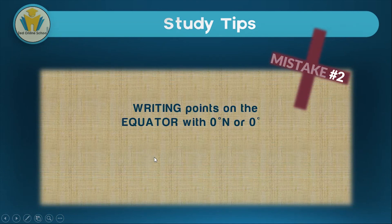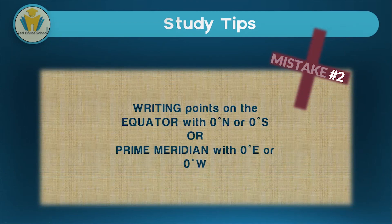Another mistake most people make is writing points on the equator with 0 degrees north or 0 degrees south, or writing points on the prime meridian with 0 degrees east or 0 degrees west. This can't happen because when something is on the equator it's on neutral ground — it's neither north nor south, and neither east nor west. So take note when answering questions: never write a point in line with the equator with degrees north or south, or a point in line with the prime meridian with 0 degrees east or west. We already covered this example earlier in the video.